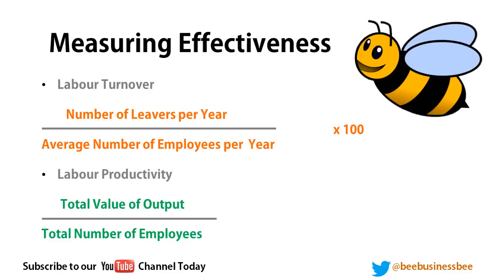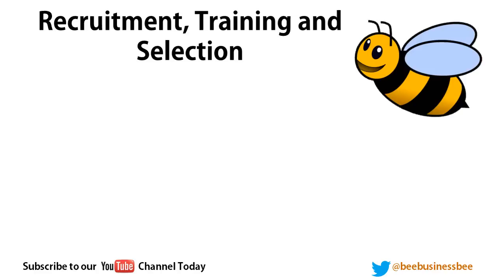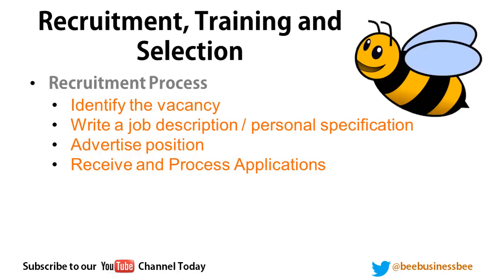The recruitment process starts with identifying the vacancy — knowing what job is available. Then you write a job description and a personal specification, listing the requirements of the job and what the ideal candidate looks like. You then advertise the position, which could be in a local newspaper, internally or externally, depending on your needs.